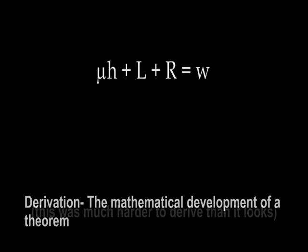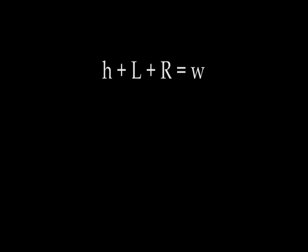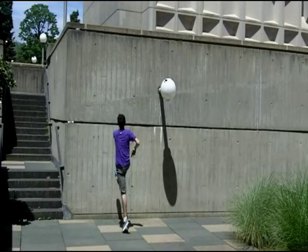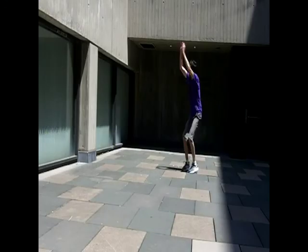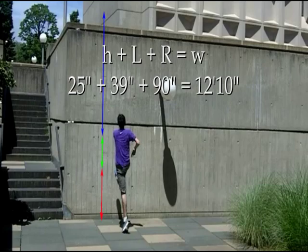With all of this information and some derivation, I've found the equation for maximum wall run height of any given traceur. With good grip, a traceur's maximum wall run is given by this equation, and this changes and can be calculated for every traceur. Taking my own individual stats: start with leg length, then add maximum vertical leap, and add reach from foot to hand for the maximum wall run height possible with perfected technique.